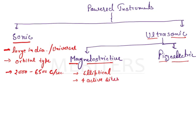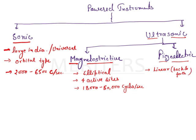The frequency range will be the same for both ultrasonic types. The piezoelectric and magnetostrictive instruments both have a range of around 18,000 to 50,000 cycles per second. Coming to the piezoelectric unit — the one seen in the question — the pattern of vibration of the tip is linear, or we can say to-and-fro, back-and-forth. There are only two active sites, which is the basic difference from the magnetostrictive.